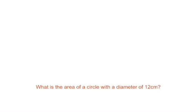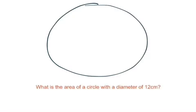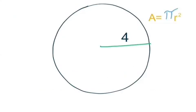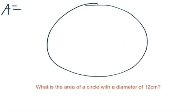Last question real quick and we'll finish up. What is the area of a circle with a diameter of 12 centimeters? Let's draw this circle. They didn't even give us a circle. We want the area. We want the inside area equals, what's that formula again? Pi R squared. All right, cool.